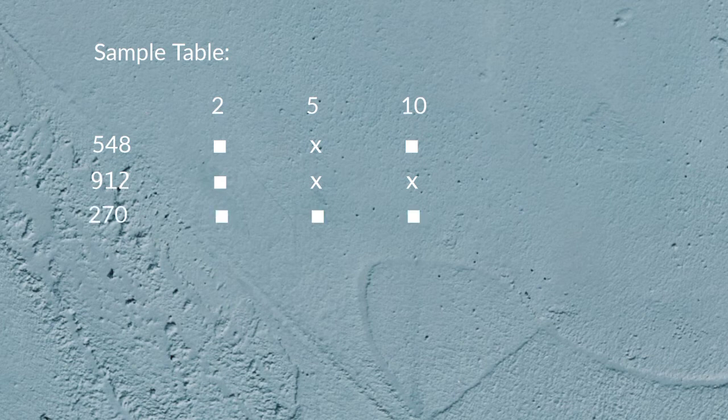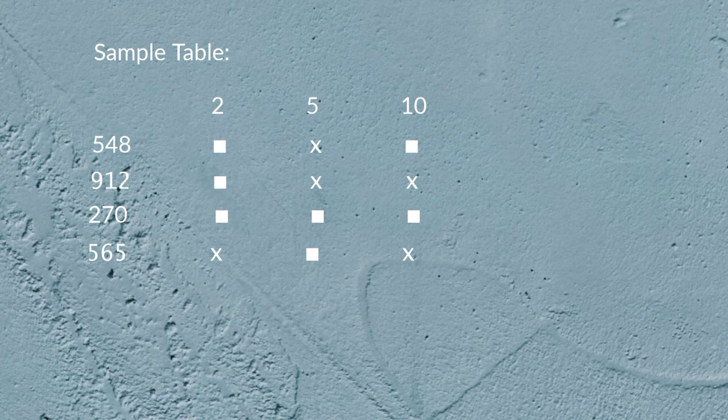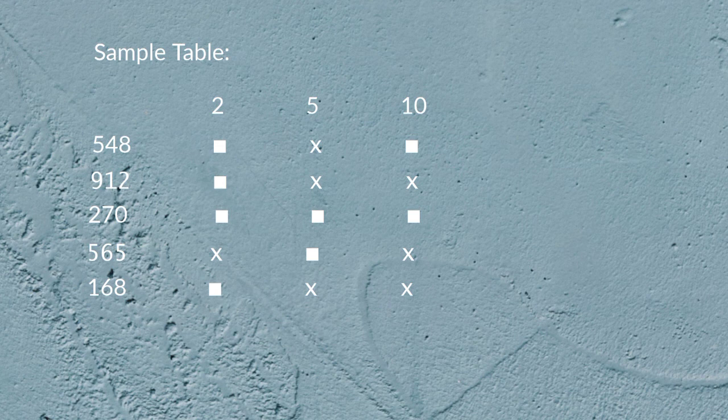270: it is divisible by 2, it is divisible by 5, and also divisible by 10. 565: it is not divisible by 2, it is divisible by 5, and not divisible by 10. 168: it is divisible by 2, not divisible by 5, and not divisible by 10.